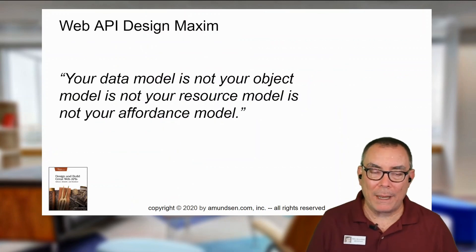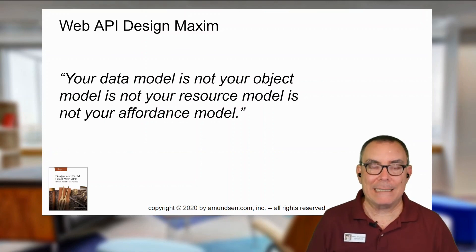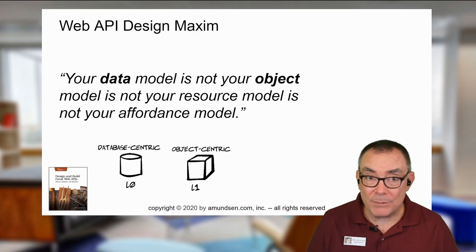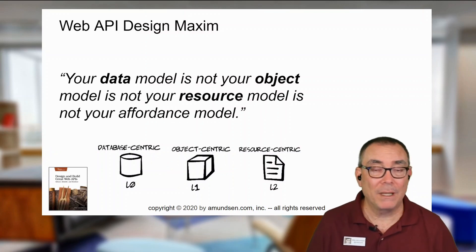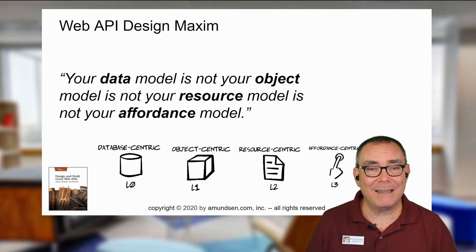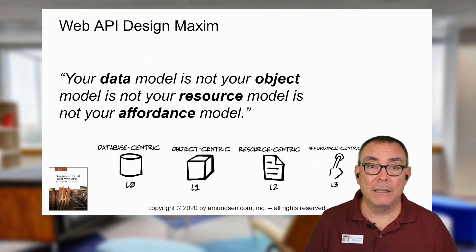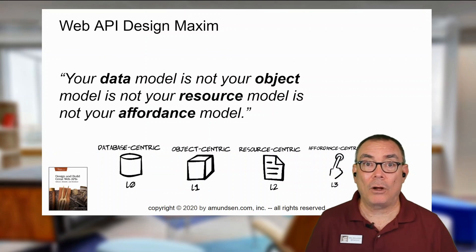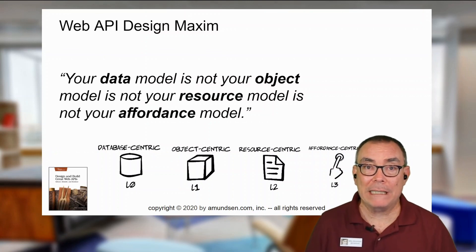And that leads to another way to think about this — what I call my API design maxim. Your data model is not the same as your object model. And your object model is not the same as your resource model. And your resource model is not the same as your affordance model. You can actually manage each of these independently. If I'm focusing on external formats for my interface, I can change my internal elements like object modeling and data modeling without bothering anybody. People don't have to change their clients at all, as long as I keep honoring the interface that they have.